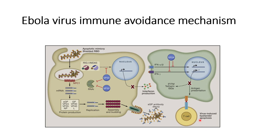This will prevent the immune response generated by T cells. These are the various ways by which Ebola virus avoids the immune mechanism or immune response from the host. In order to understand this immune avoidance in detail, you can refer to the references provided in the description. Thank you for your time.